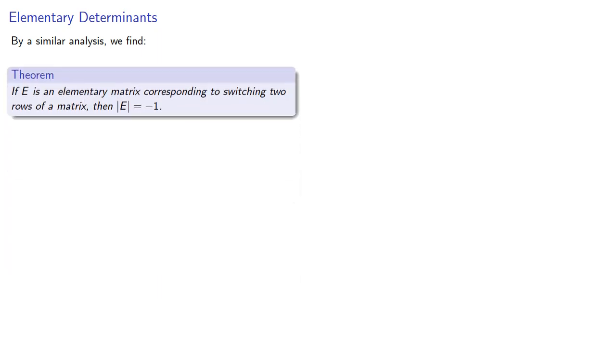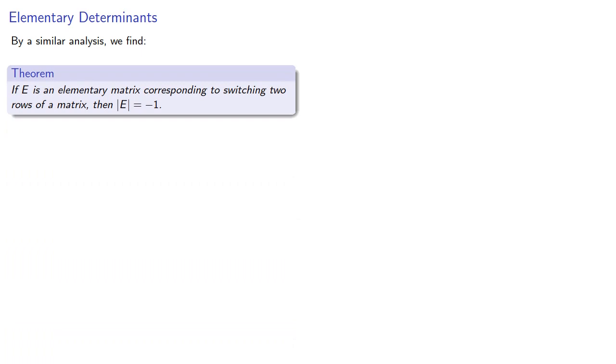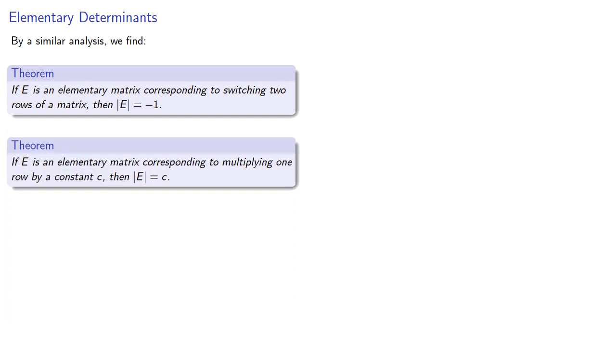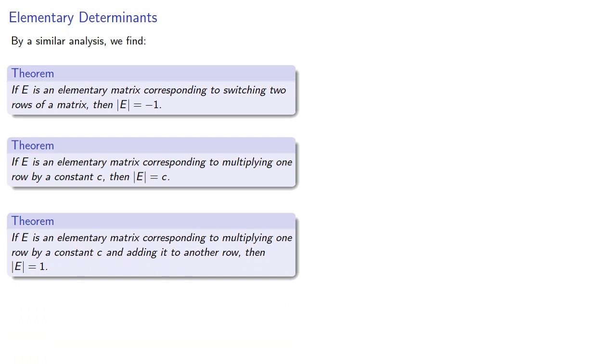By a similar analysis, we find that the elementary matrix corresponding to switching two rows has determinant negative one, the elementary matrix corresponding to multiplying one row by a constant C has determinant C, and we just determined that the elementary matrix corresponding to multiplying one row by a constant and adding it to another row has determinant one.